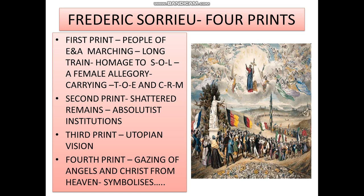The first slide talks about Frederick Sorrieu's four prints. The first print shows that people from Europe and America are marching in a long train and offering homage to the statue of liberty. The statue of liberty is a female figure carrying a torch of liberty in her hand, and in the other hand the charter of rights of men — a female allegory.